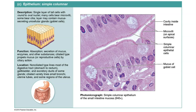Simple columnar epithelium that contains cilia is found within the uterine tubes of the female reproductive system. Cilia are small hair-like extensions found at the apical surface of the epithelium. The cilia move rhythmically, passing substances or objects across the surface of the tissue, and in the uterine tubes they function to move ovulated eggs through to the uterus.